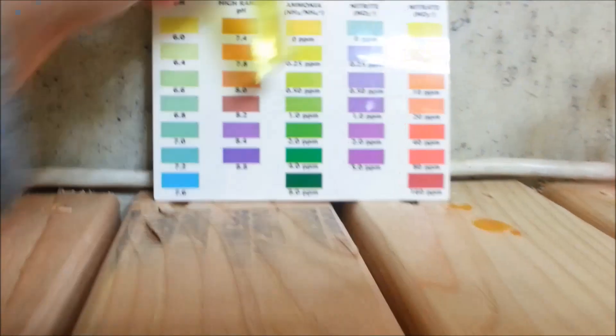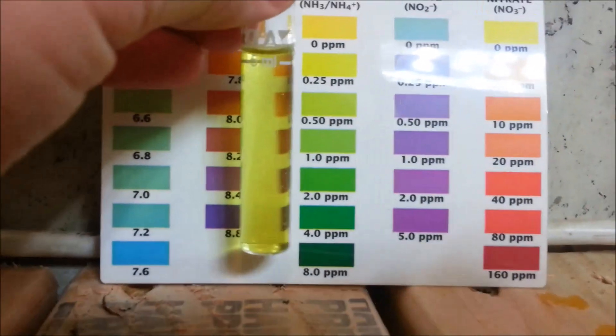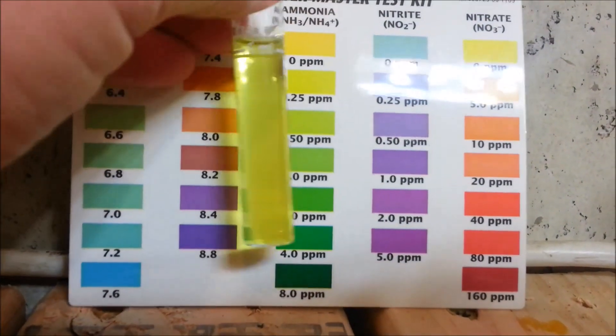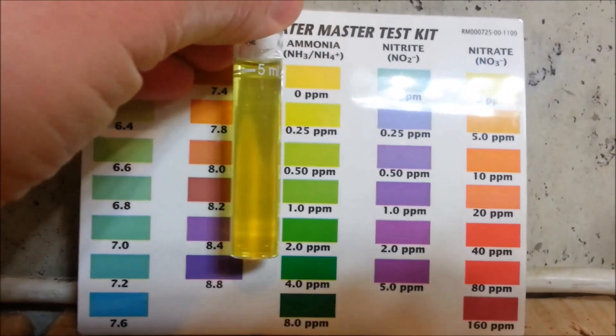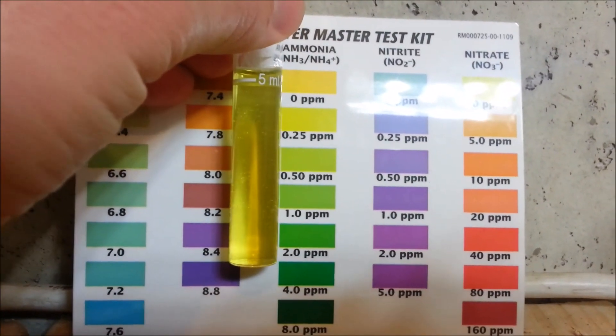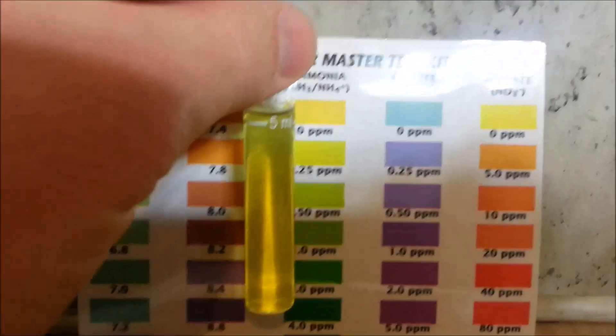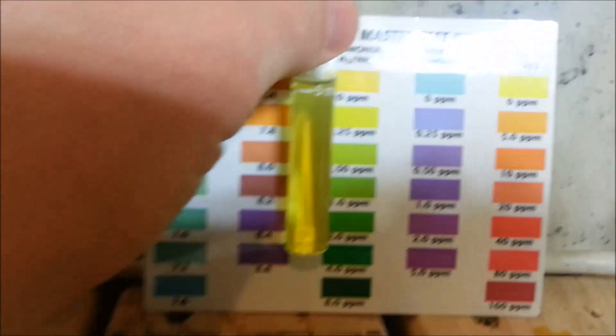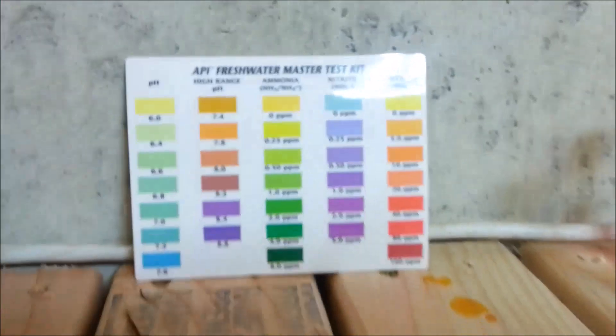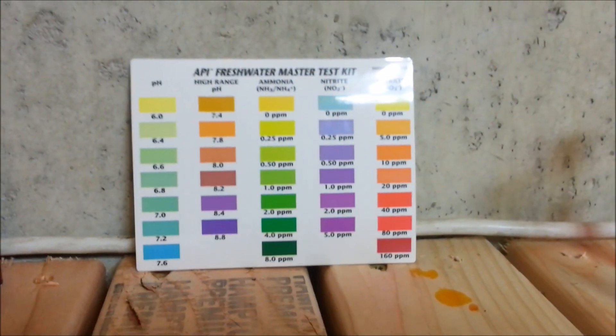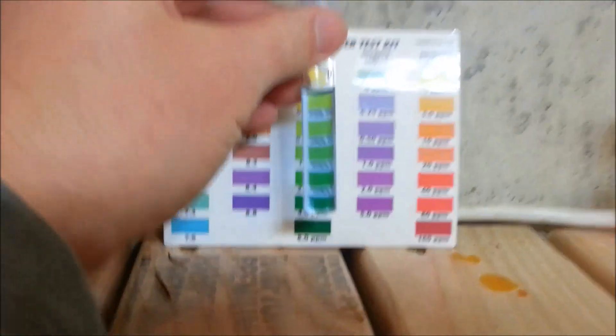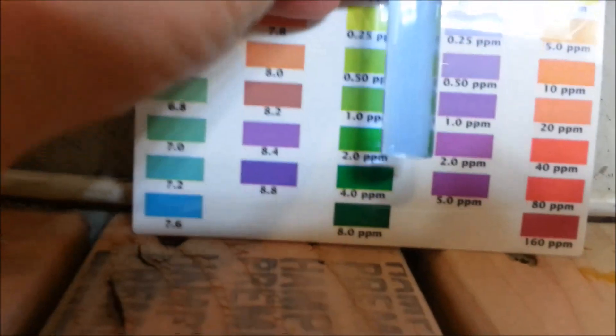The next one is ammonia. Again, last time I did the test about a week and a half ago this was maxed out dark green, and now it's looking like 0.25 parts per million or less. I'm really happy with that - that's good. Less ammonia - you don't want to have any ammonia in the system. Basically as soon as the fish produce that, the nitrification process, the bacteria, should be eating that stuff up right away.